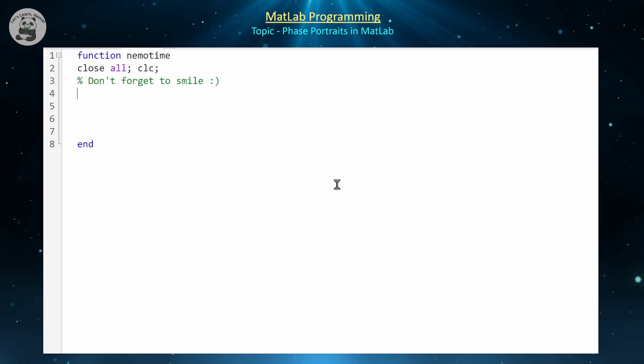So let's get right into it. The first thing that we need to specify to MATLAB is the system of ODEs that we plan to solve. We're going to use the notation x prime equals f(x,y) and y prime equals g(x,y).